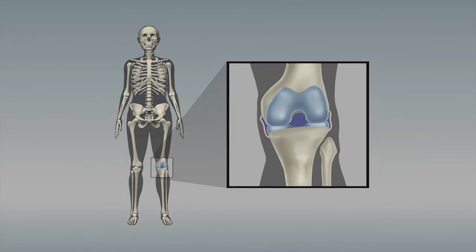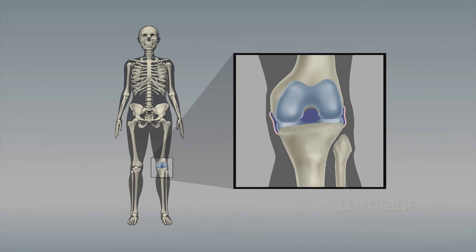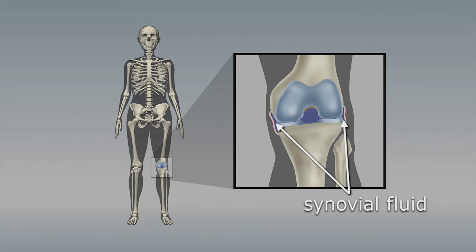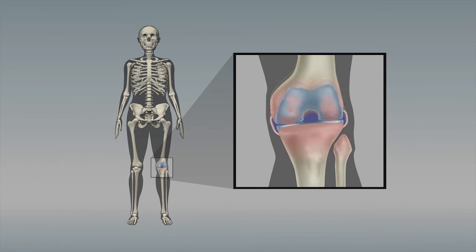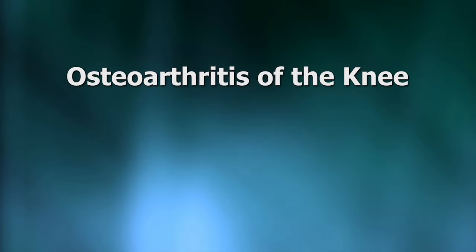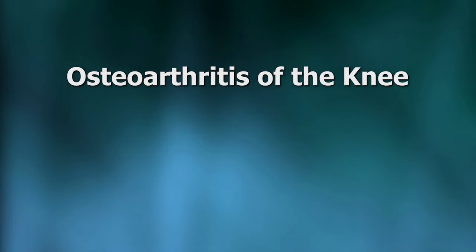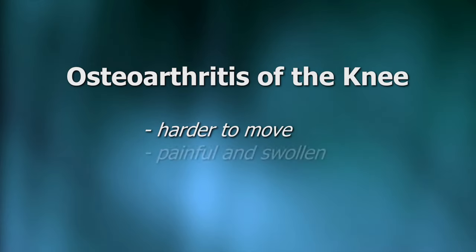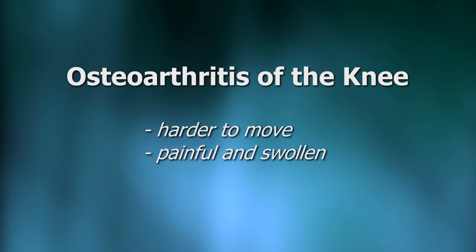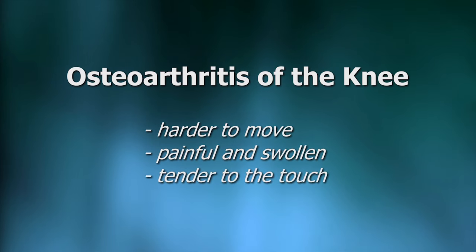The inside of a healthy knee looks like this. It's padded with cartilage, which is a rubbery tissue that provides a cushioning effect, and it also contains a small amount of fluid. When the cartilage wears away, the bones are rubbing together without that cushion and can cause the joint to become inflamed, which results in pain and stiffness. The person who has osteoarthritis of the knee finds it harder to move because of the pain. The knee may even be swollen and tender to the touch.